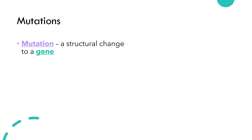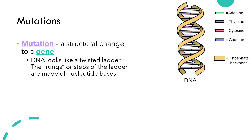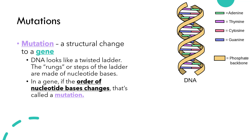So again, a mutation is a structural change to a gene. A gene is a section of DNA that has the instructions for making a protein. Strands of DNA look like a twisted ladder. The rungs or steps of the ladder are made of nucleotide bases — combinations of adenine, thymine, cytosine, and guanine. If the order of those nucleotide bases changes, that is called a mutation.